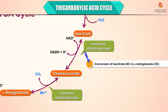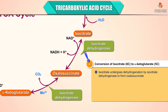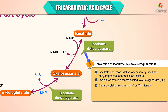Step 3 is the conversion of isocitrate to alpha-ketoglutarate. Isocitrate undergoes dehydrogenation by isocitrate dehydrogenase to form oxaloacetonate, which is then decarboxylated to alpha-ketoglutarate. Decarboxylation requires magnesium ions or manganese ions. This is the first oxidative decarboxylation, and one NADH is formed. It is a reversible reaction.